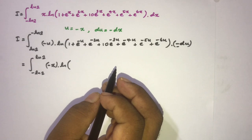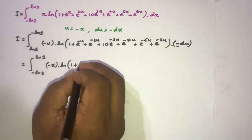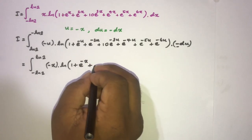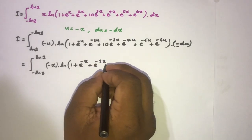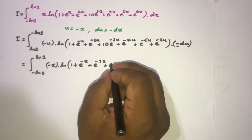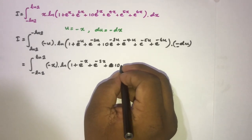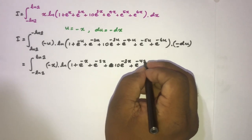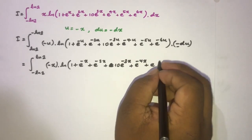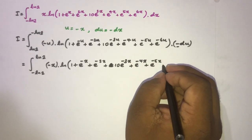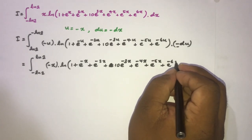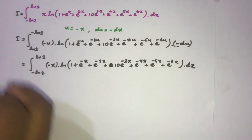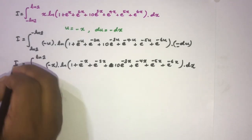...1 plus e^(-x) plus e^(-2x) plus 10·e^(-3x) plus e^(-4x) plus e^(-5x) plus e^(-6x) dx. We note this integral also equals I.